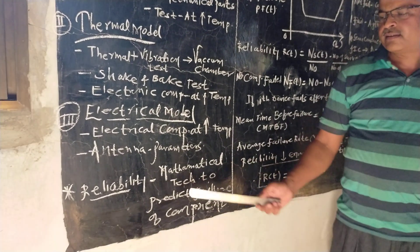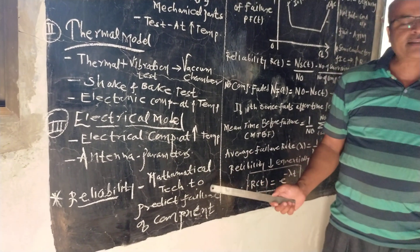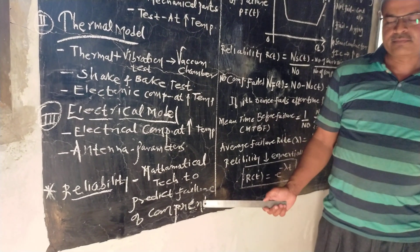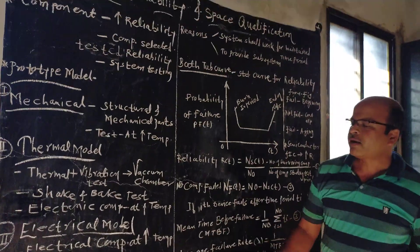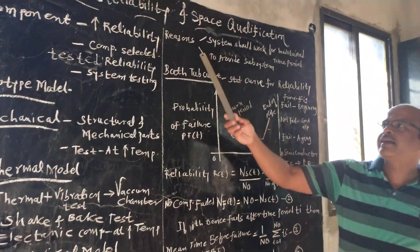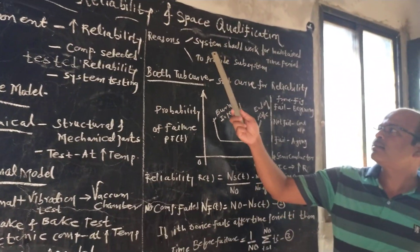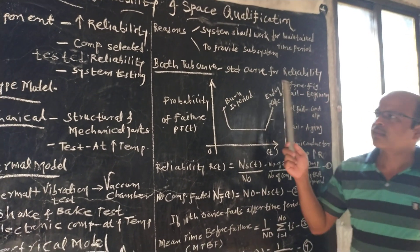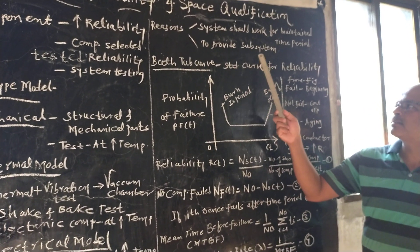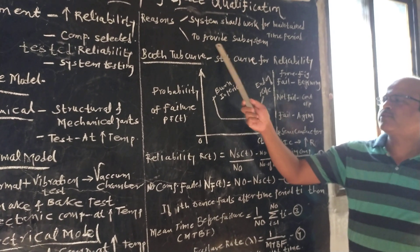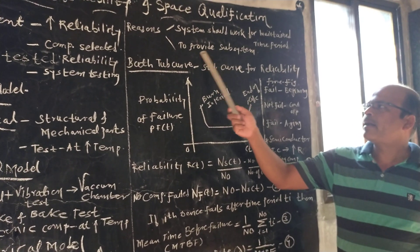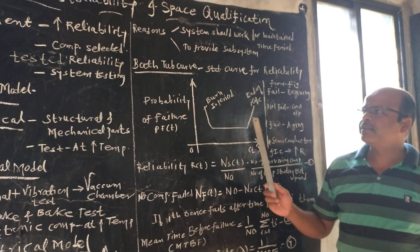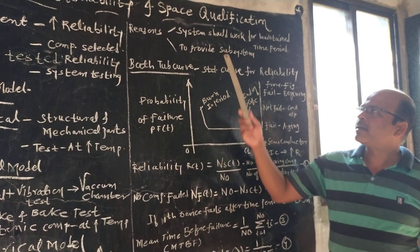Reliability is a mathematical technique used to predict the failure of a component. There are two reasons reliability is needed: first, the system should work for a maintained time period; and second, to provide a backup subsystem after the failure of any system.